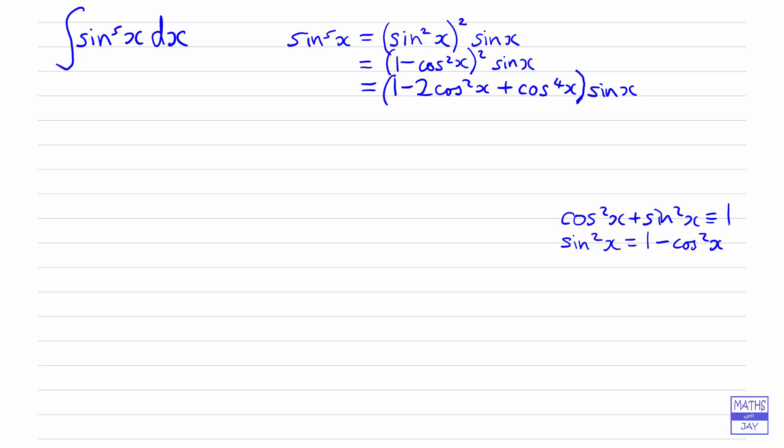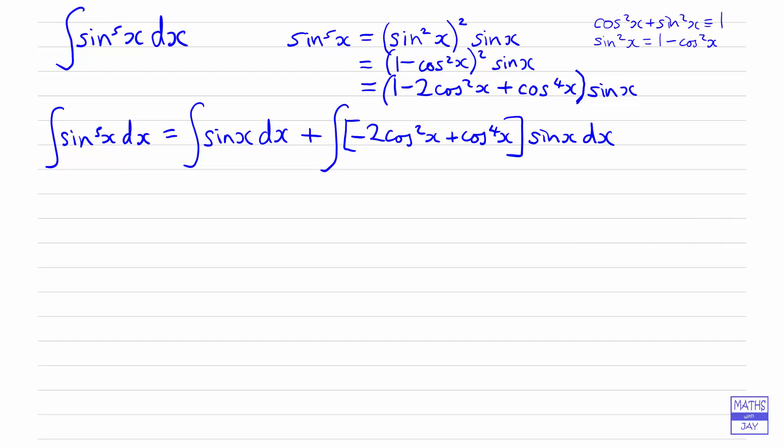So I think we're ready now to write down the integral again. Remember, we're actually trying to integrate this. So the integral of sine to the power of 5x is going to be equal to 1 times sine x first of all, so that's sine x dx. And I'm going to leave that as a separate integral because that's going to be easy to integrate. And then the other part of the integral, I'm going to leave the bracket there. So minus 2 cos squared x plus cos to the fourth x, and then we've got sine x dx outside the bracket there. So now you can see that we've got two distinct integrals to look at. The first one is easy to integrate, so let's just leave that one as it is. So what we're going to do is do all the integration at the same time so that we don't get confused as to whether or not we've actually integrated.